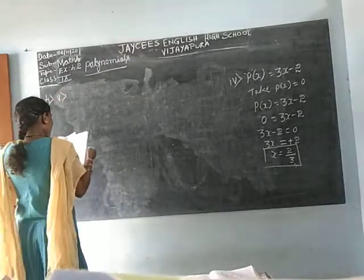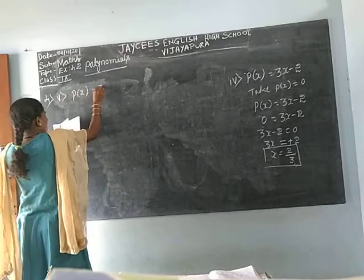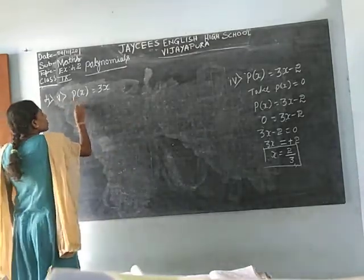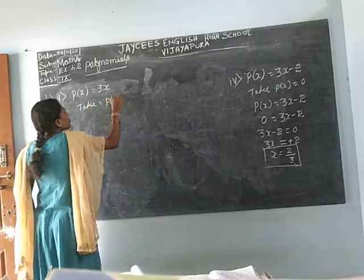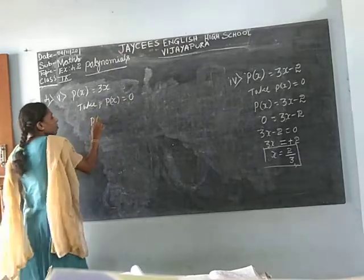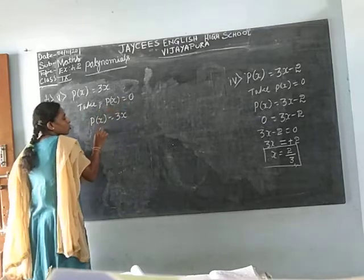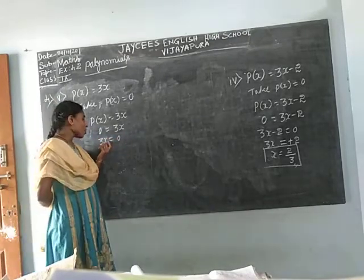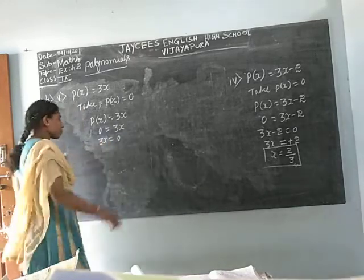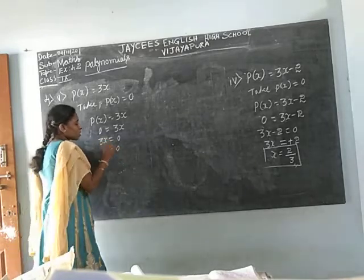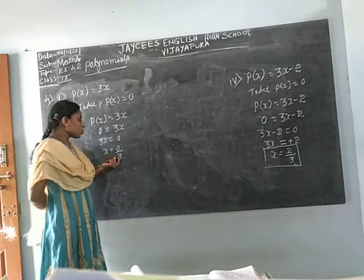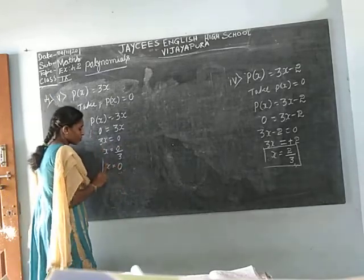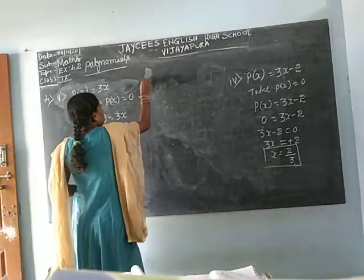Fifth problem: P(x) = 3x. We take P(x) = 0. Substituting: 3x = 0. X is equal to 0 divided by 3 — the multiplication sign goes to denominator, giving x = 0. So the zero of this polynomial is x = 0. Fifth problem already completed, go to sixth problem.